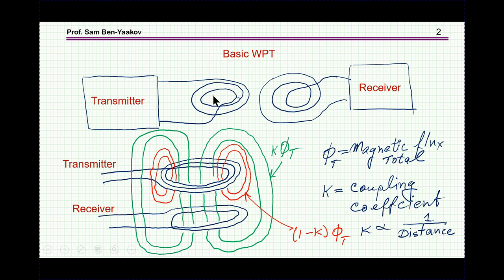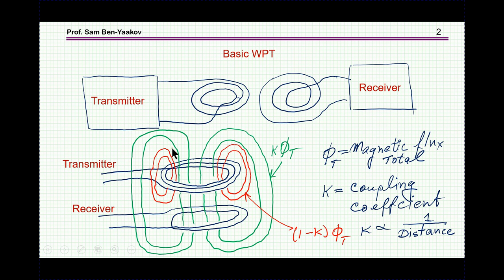The transfer of energy from the transmitter to the receiver is based on an inductive or magnetic transfer — the transmitter generates a magnetic flux which penetrates through the receiving antenna, generating a voltage that transfers power to the receiver. Unfortunately, part of this flux is not common to both and closes around the transmitter, so not all the flux reaches the receiver.